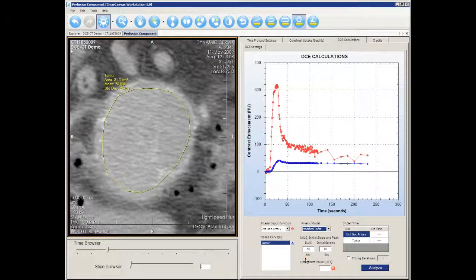Verify or change the time period for determining the initial area under the curve. Likewise, verify or change the time period for determining the initial slope of contrast uptake. Enter the correct hematocrit value.